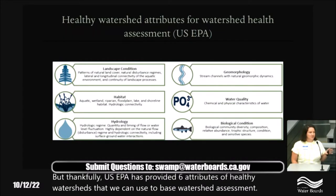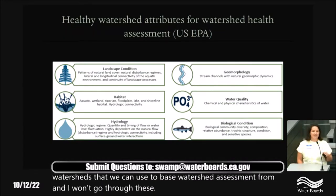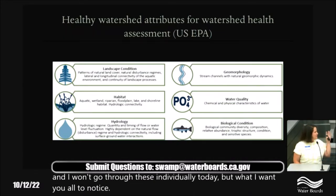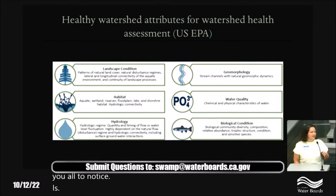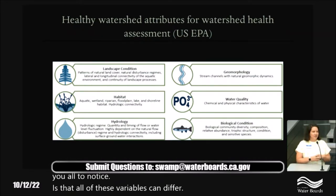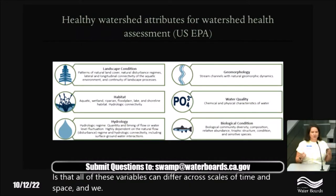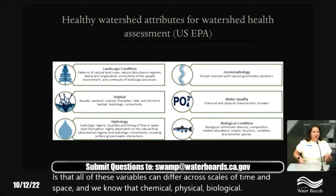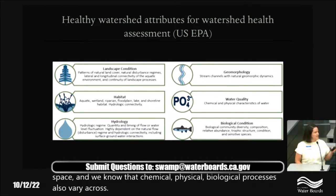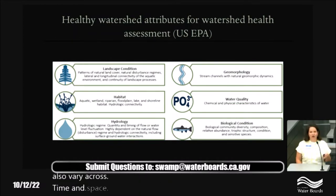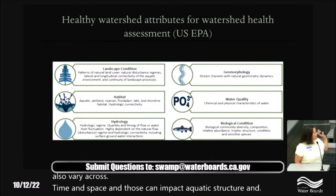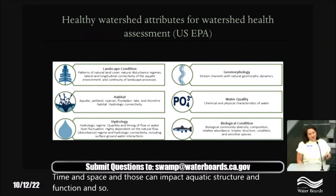I won't go through these attributes individually today, but I want you to notice that all of these variables can differ across scales of time and space. Chemical, physical, and biological processes also vary across time and space and can impact aquatic structure and function, so incorporating these attributes is really important in watershed health.